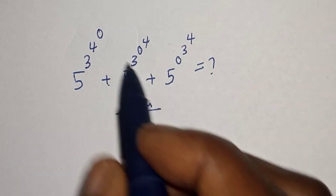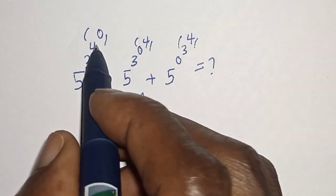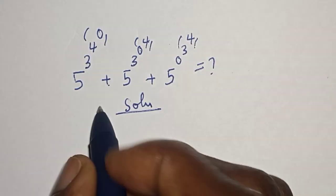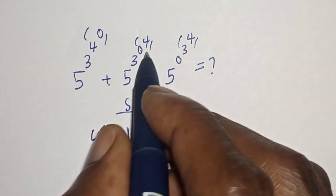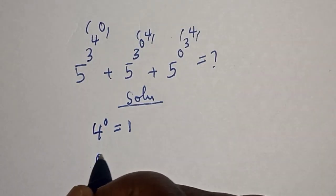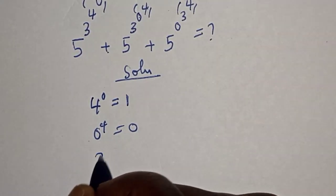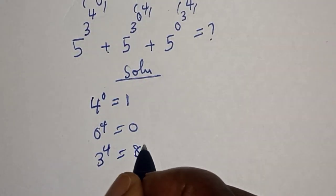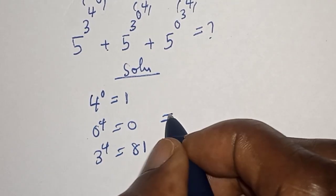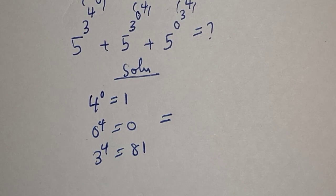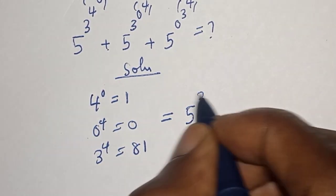We're going to start with the inner exponents. Four raised to power zero is equal to one. Then zero raised to power four is equal to zero. And three raised to power four is equal to 81.